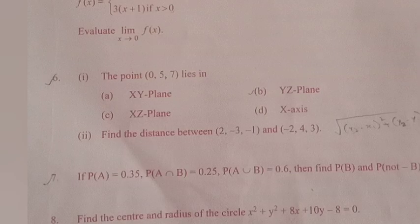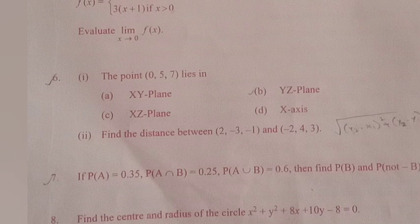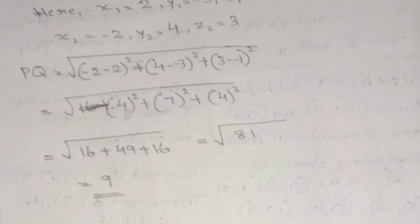Part 2. Find the distance between (2, -3, -1) and (-2, 4, 3). Distance PQ = √[(x₂-x₁)² + (y₂-y₁)² + (z₂-z₁)²]. Here x₁=2, y₁=-3, z₁=-1, x₂=-2, y₂=4, z₂=3. PQ = √[(-2-2)² + (4-(-3))² + (3-(-1))²] = √[(-4)² + 7² + 4²] = √[16+49+16] = √81 = 9.